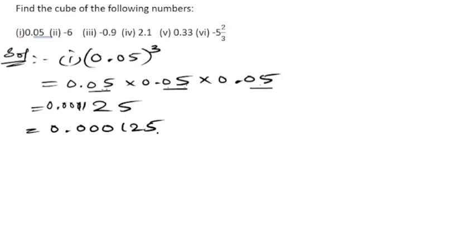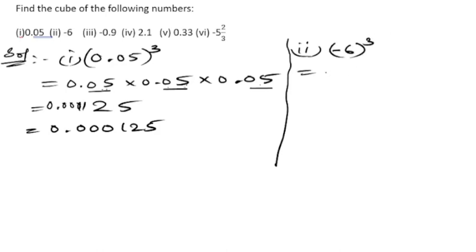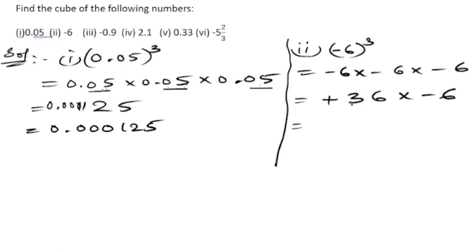So we get 0.000125 — six digits after the decimal. Now let us take the second problem: minus 6 whole cube. We will multiply minus 6 into minus 6 into minus 6. Minus into minus is plus: 6 sixes are 36, into minus 6 — plus into minus is minus — 36 into 6 is 216. So the answer is minus 216.